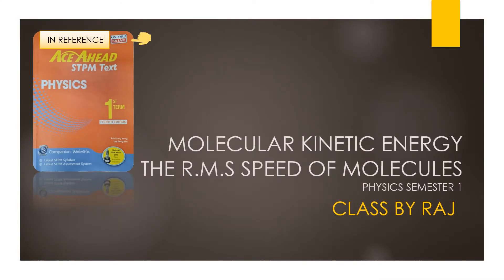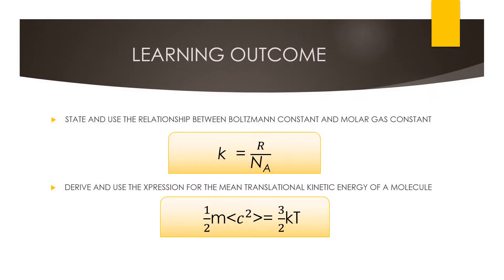Welcome back class. Today's lesson is about molecular kinetic energy and the RMS speed of a molecule. This is a class by Raj, teaching Physics Semester 1 in reference to Oxford Fajar. For Part 1 on molecular kinetic energy, we are going to state and use the relationship between the Boltzmann constant and the molar gas constant, and derive and use the expression for the mean translational kinetic energy of a molecule.